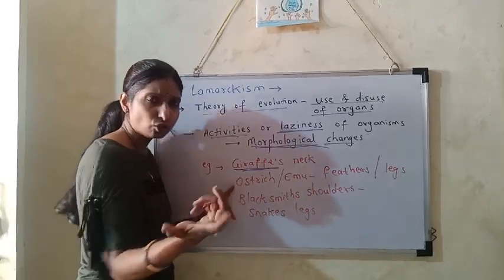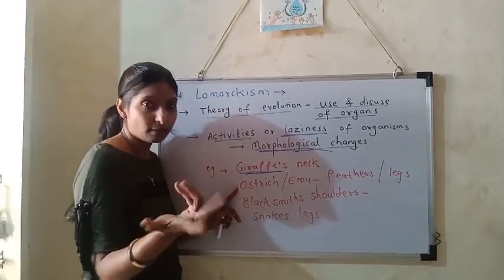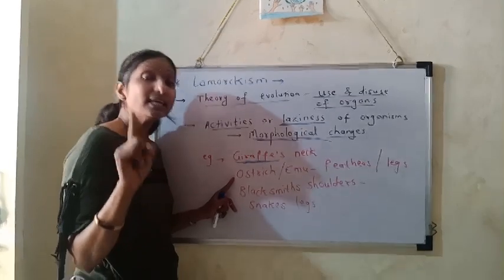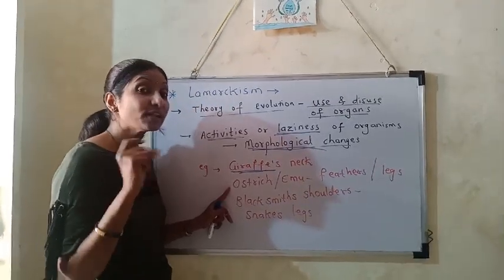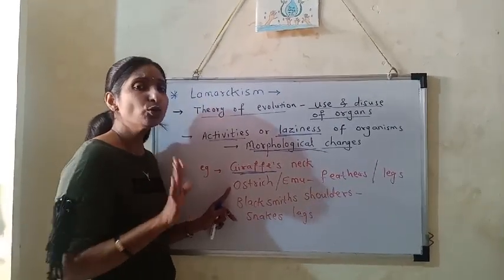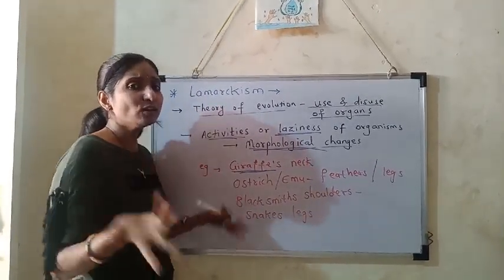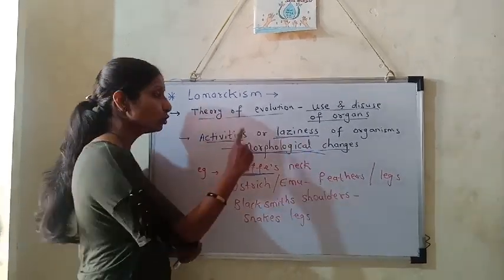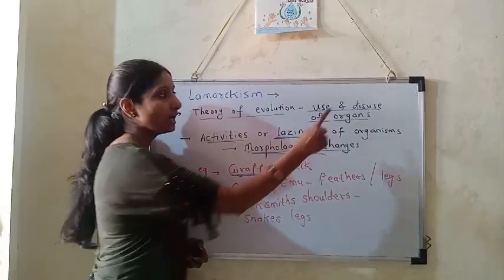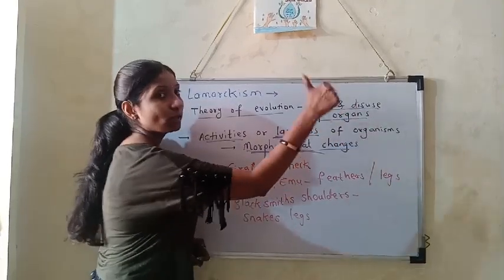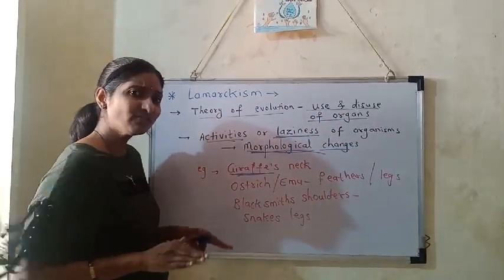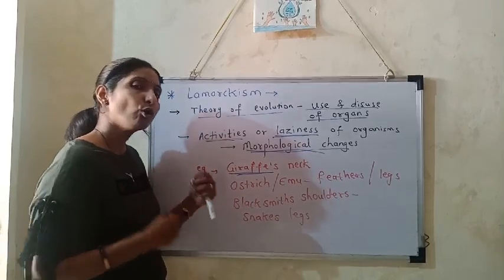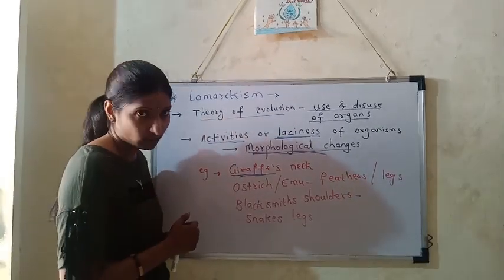For example, ostrich and emu are birds that cannot fly. They are fast-running birds because they do not use their wings but use their legs extensively. What is used becomes strong, so their legs are very strong and they run very fast, while their wings are not well developed.